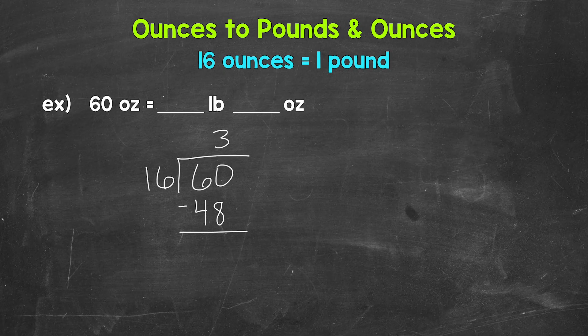Three times 16 gives us 48. So let's see what our remainder is here. 60 minus 48 gives us 12. So we have three remainder 12.